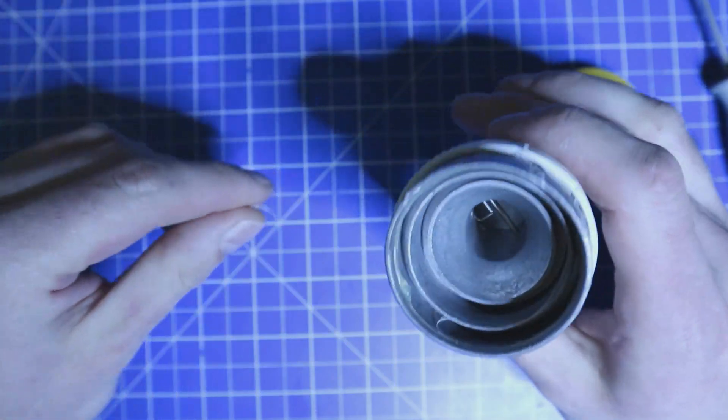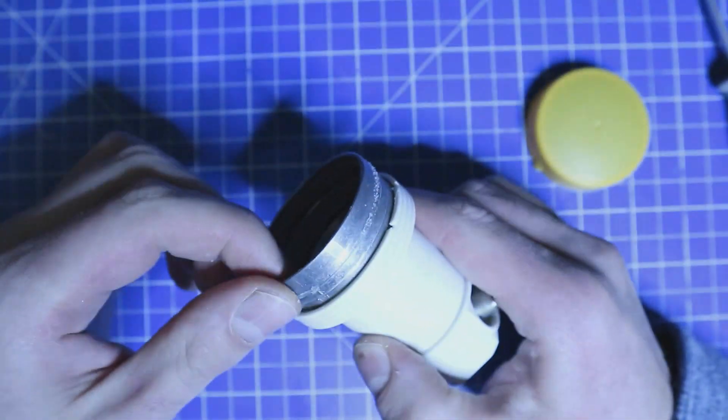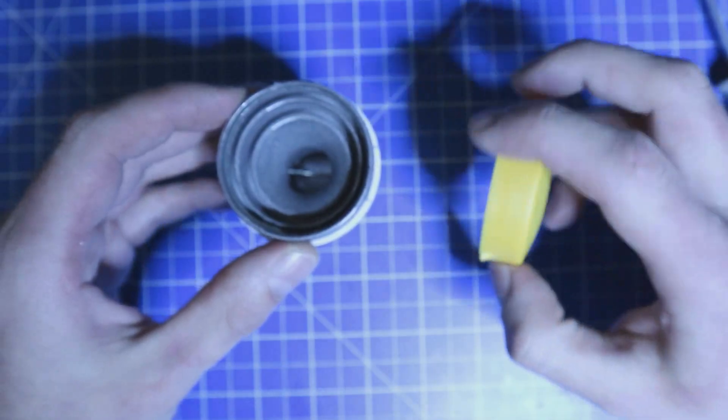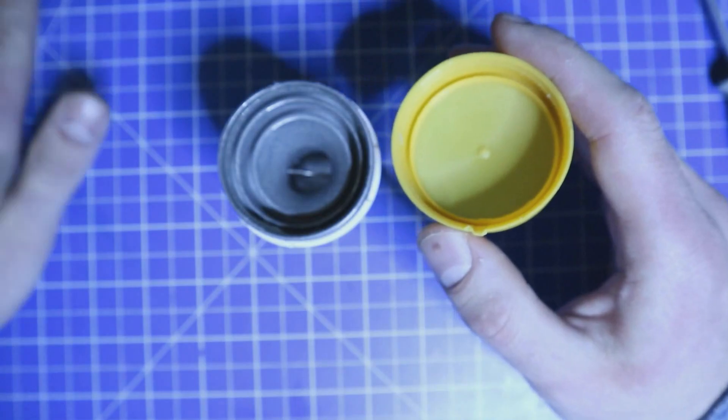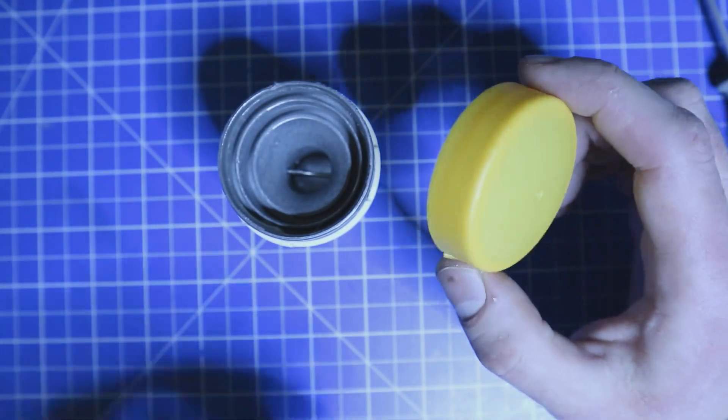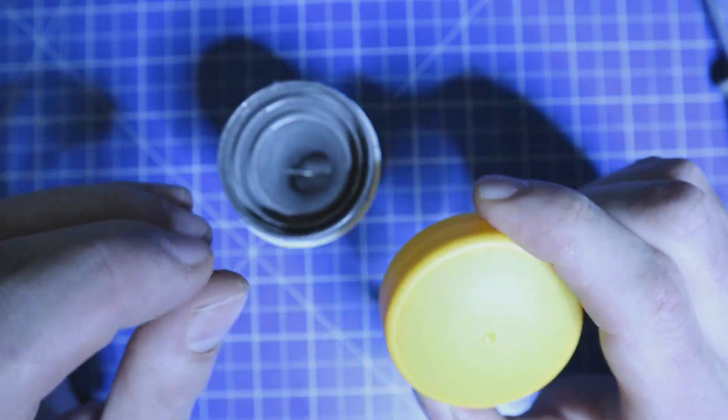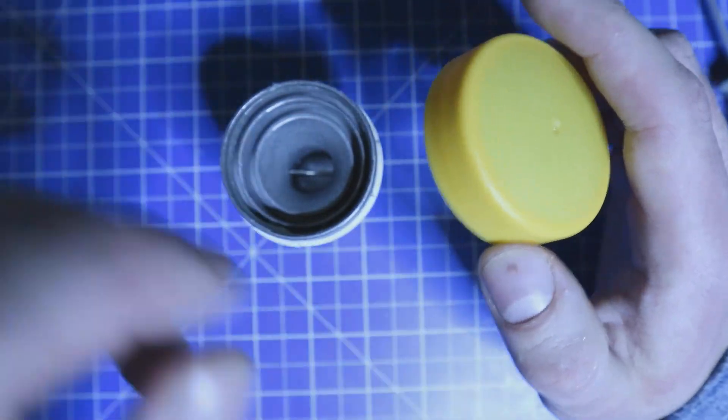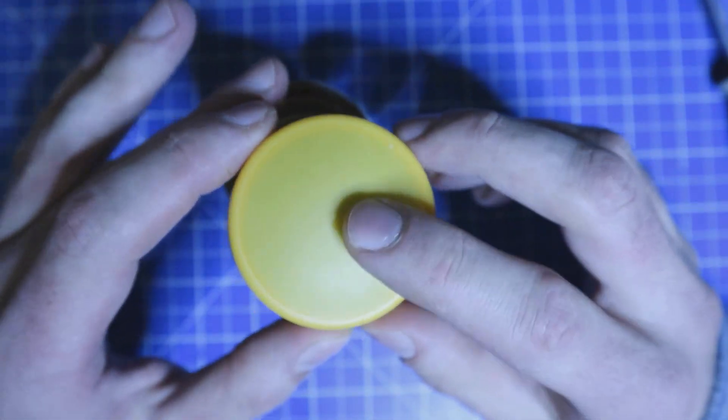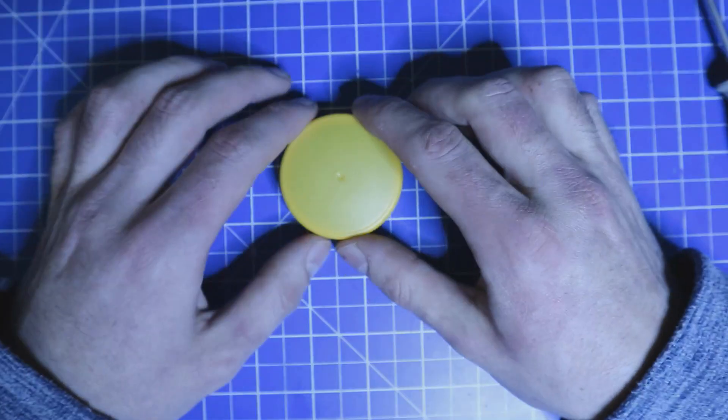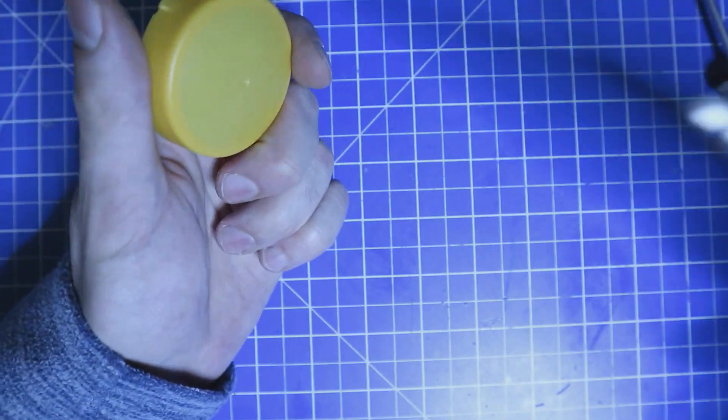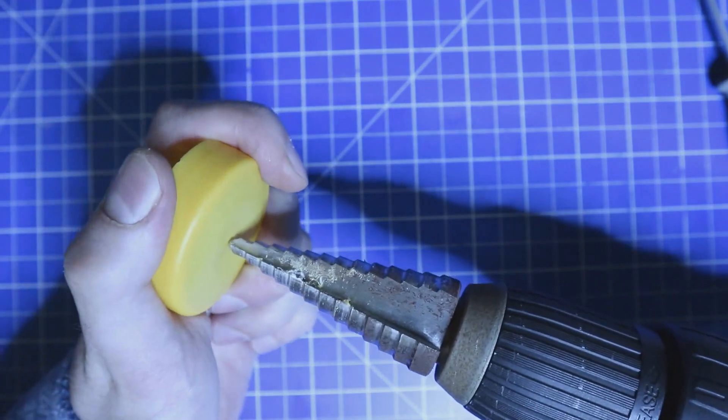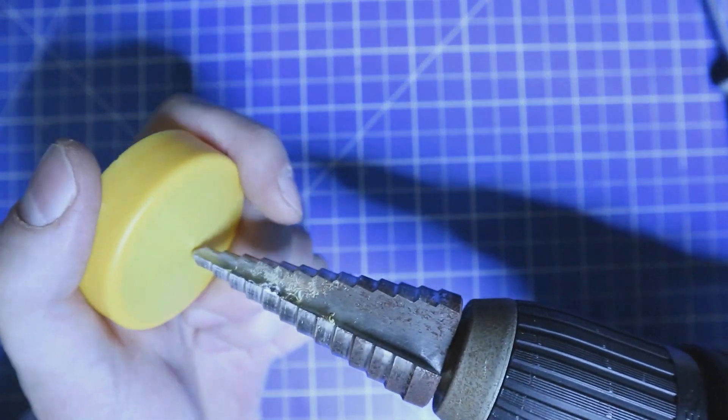You can see here that the lid was glued on. I'd recommend to apply some glue or some sealant material later on so there doesn't get water inside it. When you have taken the lid off you can use your step drill and drill inside until you are at the 22 millimeter mark.